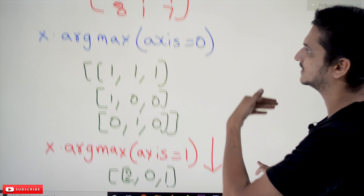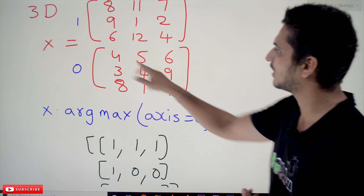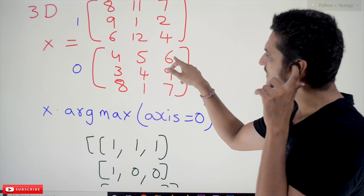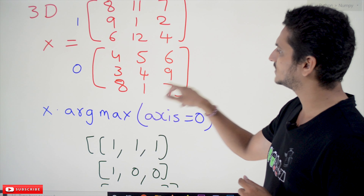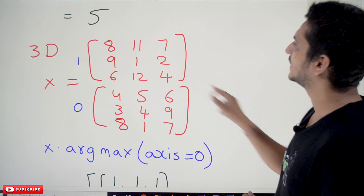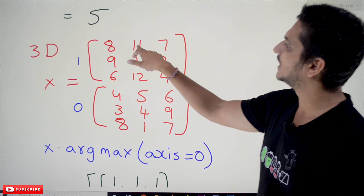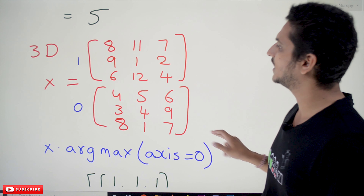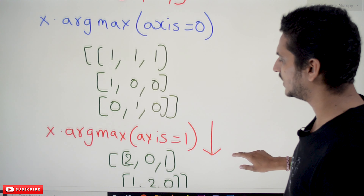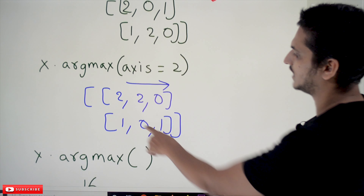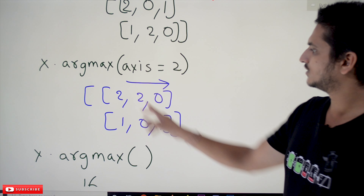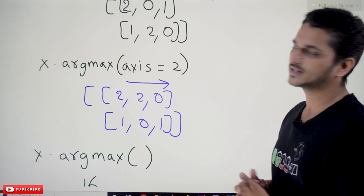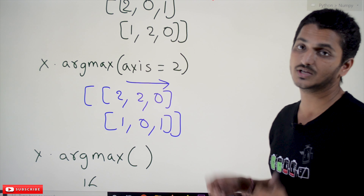For axis=2 in the three-dimensional array, it works along the column direction within each row. For the first matrix: [4,5,6] max is 6 at index 2; [3,4,9] max is 9 at index 2; [8,1,7] max is 8 at index 0. For the second matrix: [8,11,7] max is 11 at index 1; [9,1,2] max is 9 at index 0; [6,12,4] max is 12 at index 1. The output is [[2,2,0],[1,0,1]].